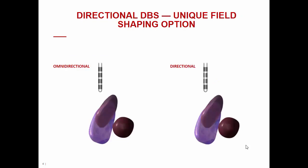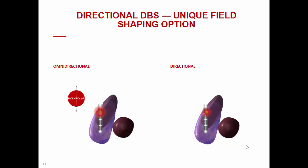The second point is that the volume of tissue activated, or the VTA, generated by omnidirectional versus directional electrodes is significantly different. Omnidirectional stimulation is axially symmetric — equally distributed in all directions — whereas directional stimulation is axially asymmetric, meaning the VTA is preferentially pushed towards one direction. This concept is critical for understanding the full potential of directional programming.